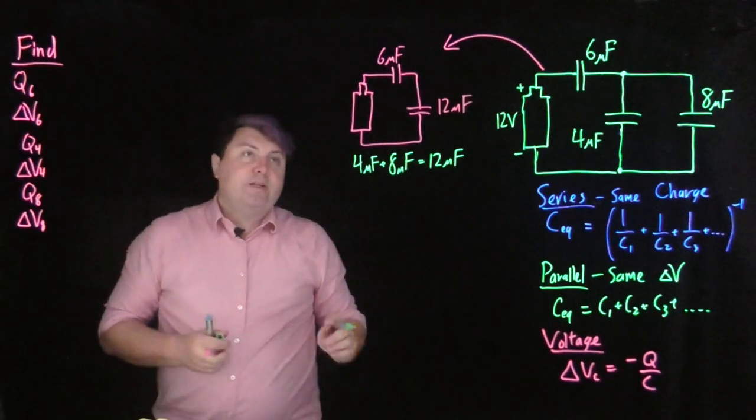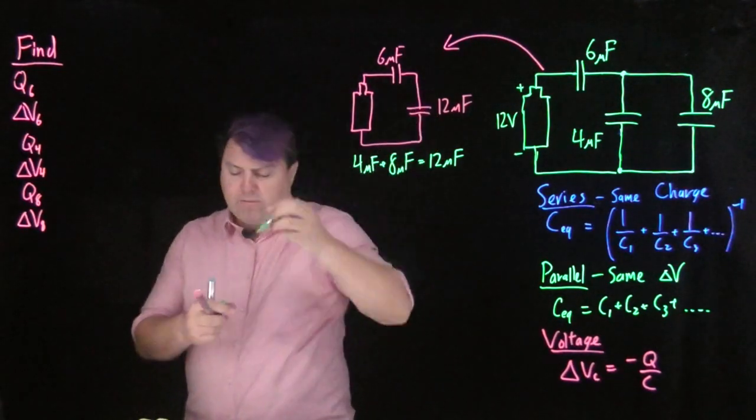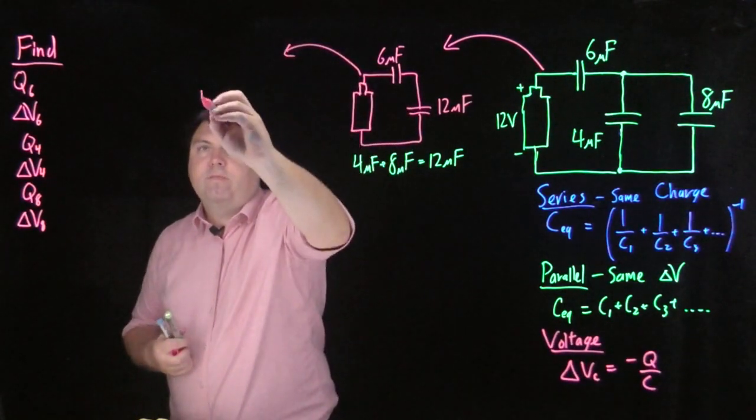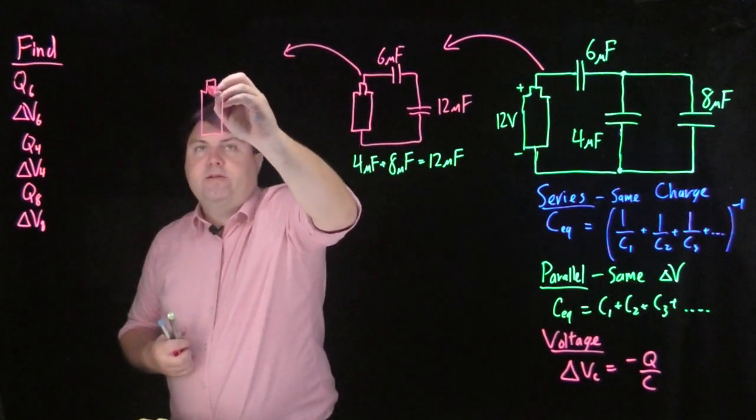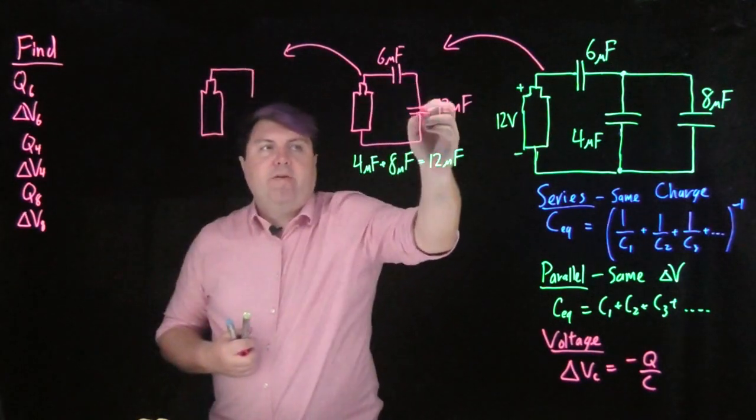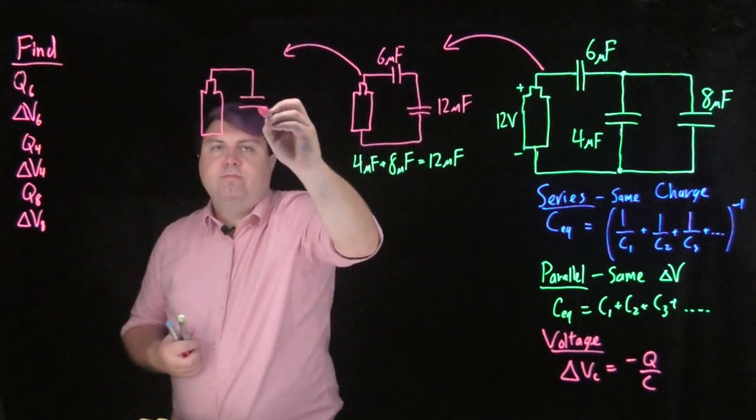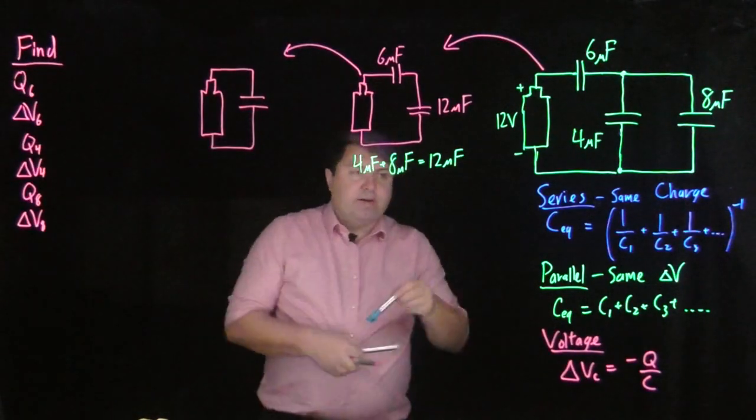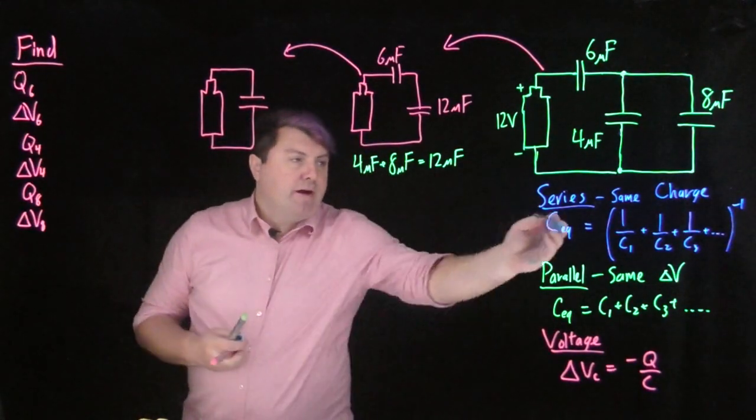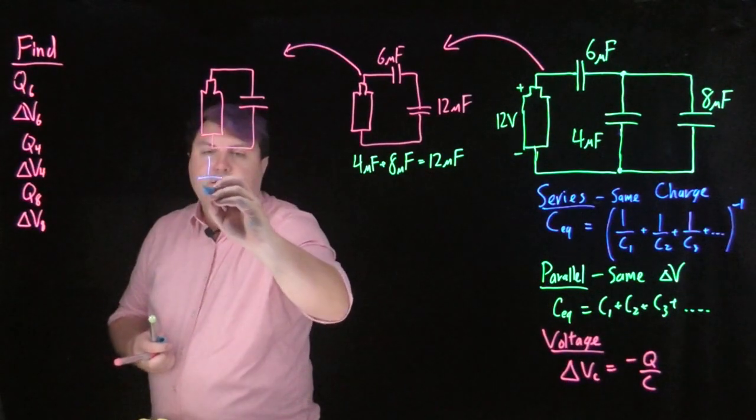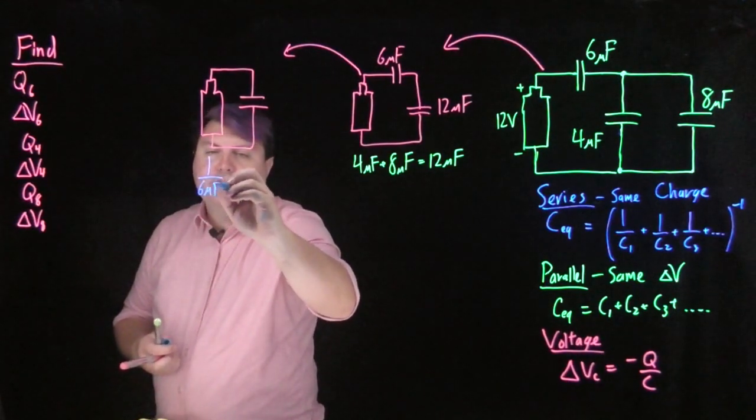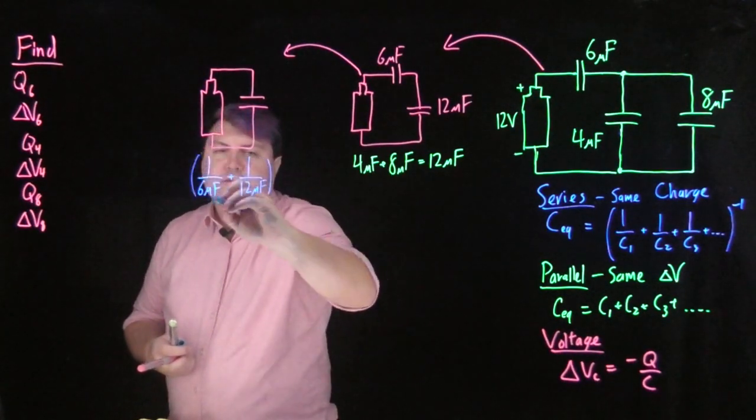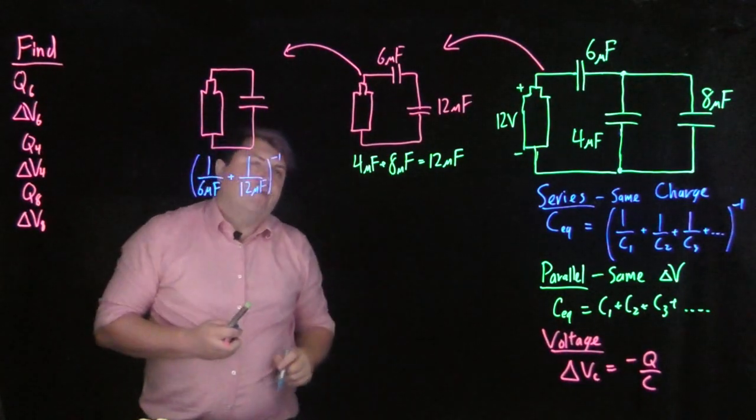My job isn't quite done yet because I can still write it even simpler. Still have my battery, but now I can combine these two, and I know that they are in series, so I have 1 over 6 microfarads plus 1 over 12 microfarads to the negative one.